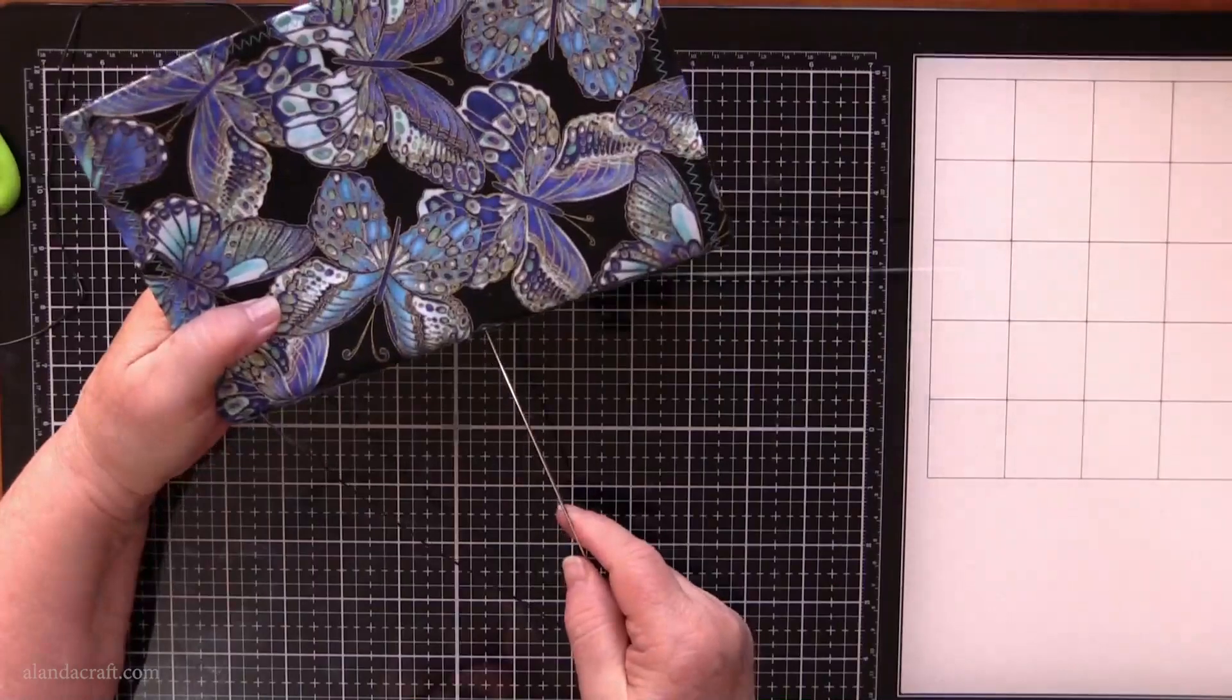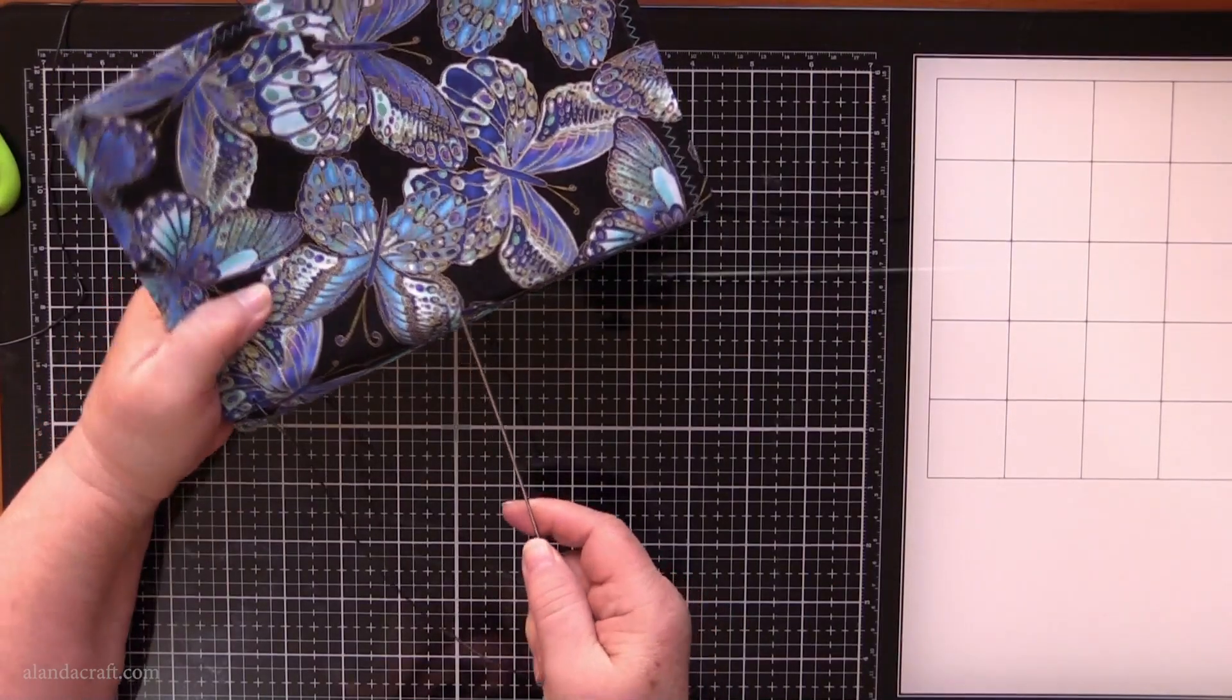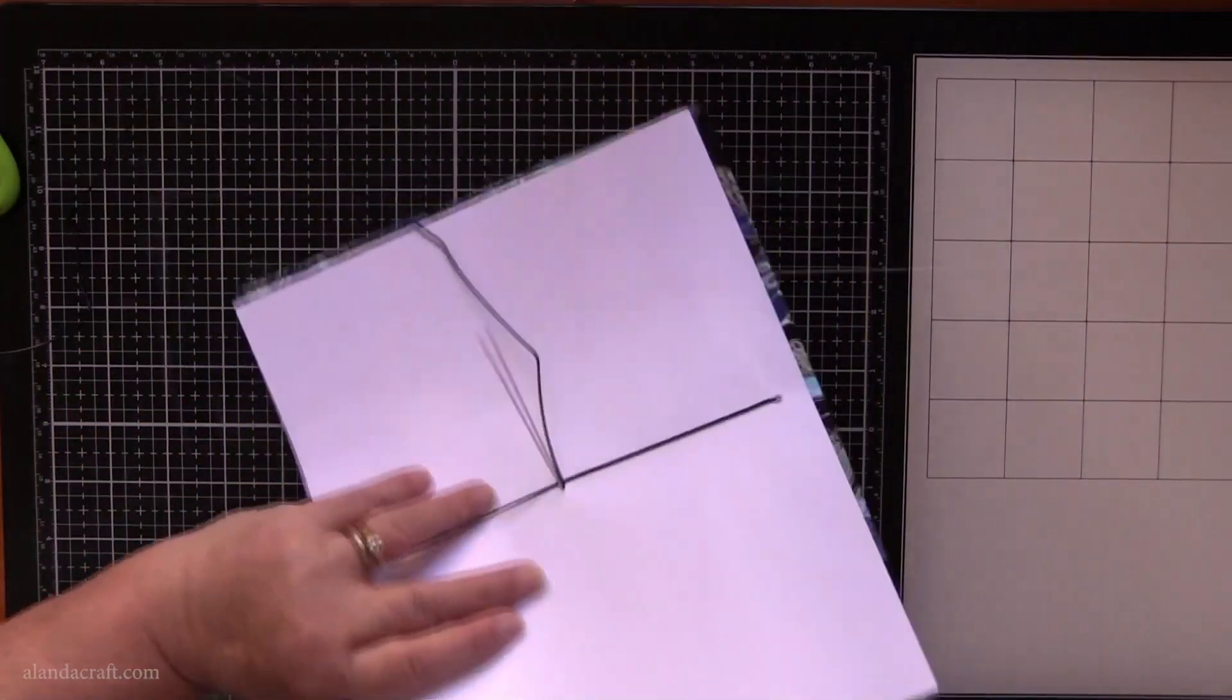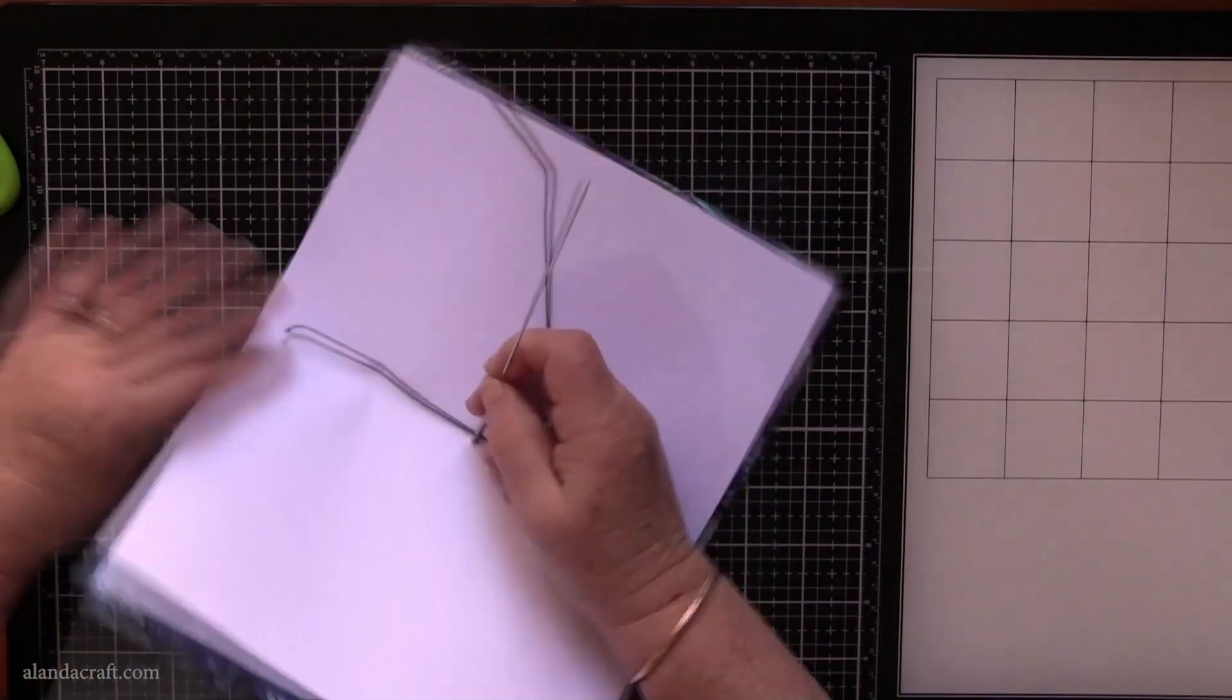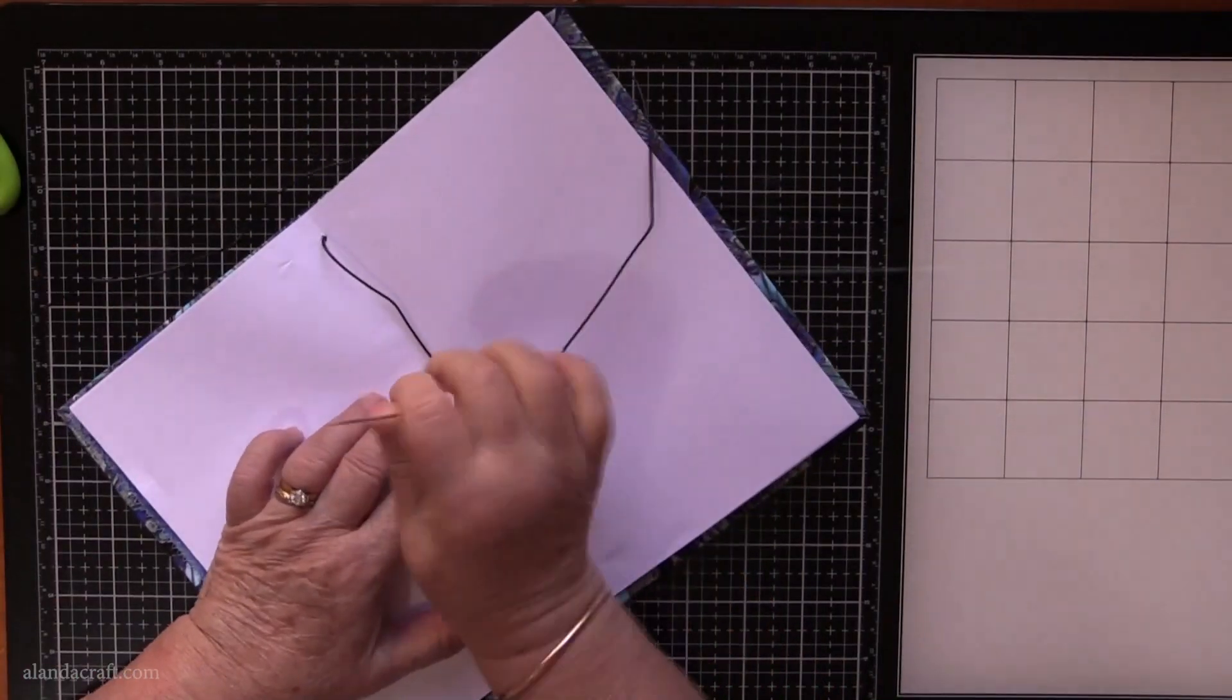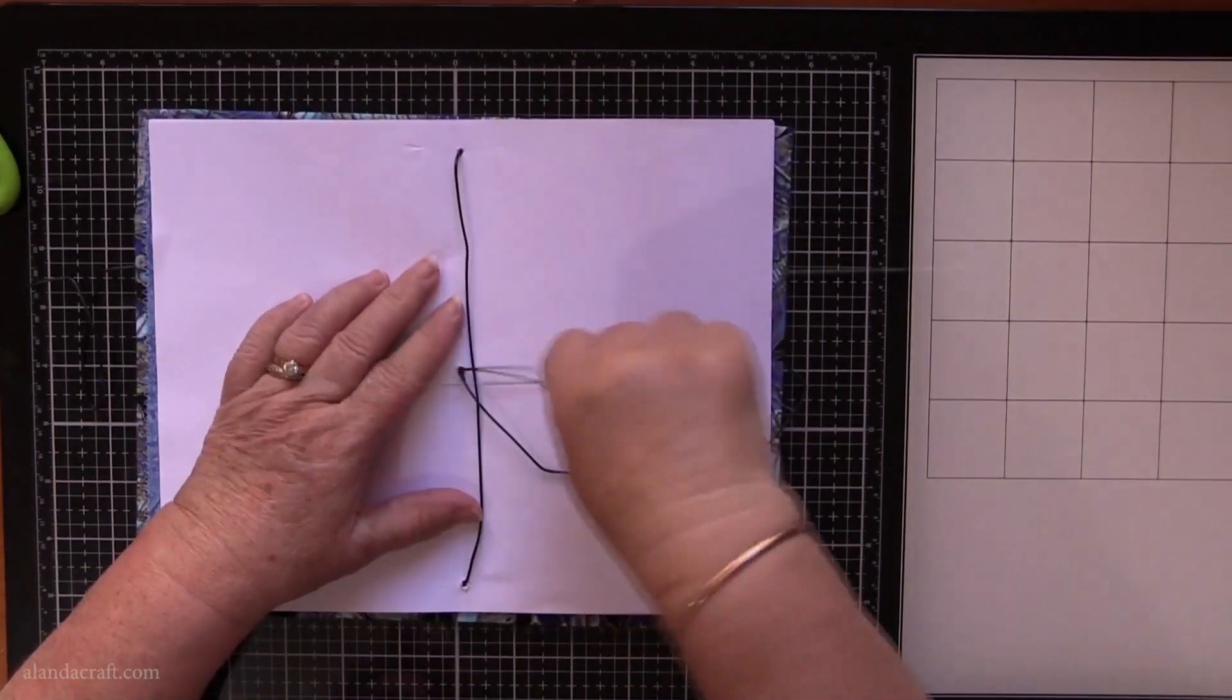Now we're going to bring it up through the middle again. This can also cause a little bit of trauma because you've now got two links of cord coming through, but just give it a tug. There we go, all right.